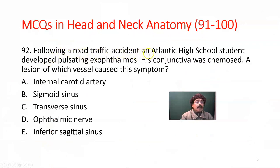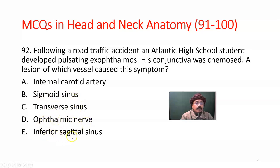Following a road traffic accident, a student developed pulsating exophthalmos. His conjunctiva was chemosed. A lesion of which vessel caused this symptom? The choices are internal carotid artery, sigmoid sinus, transverse sinus, ophthalmic nerve, and inferior sagittal sinus. The answer is the internal carotid artery.